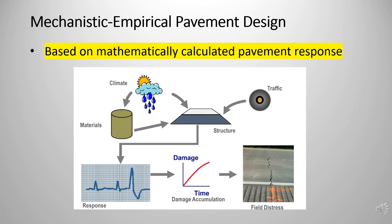On the other hand, the mechanistic empirical approach takes into account all factors affecting the behavior and performance of a pavement structure. Some of these factors are: traffic, including wheel load, wheel configuration, truck classification, frequency, and speed; climate, including temperature, rain, groundwater, and freeze-thaw; soil, including type, strength, and expansion; materials, including behavior, strength, and durability; failure mechanism; acceptable damage; and reliability, which is based on a probabilistic approach.